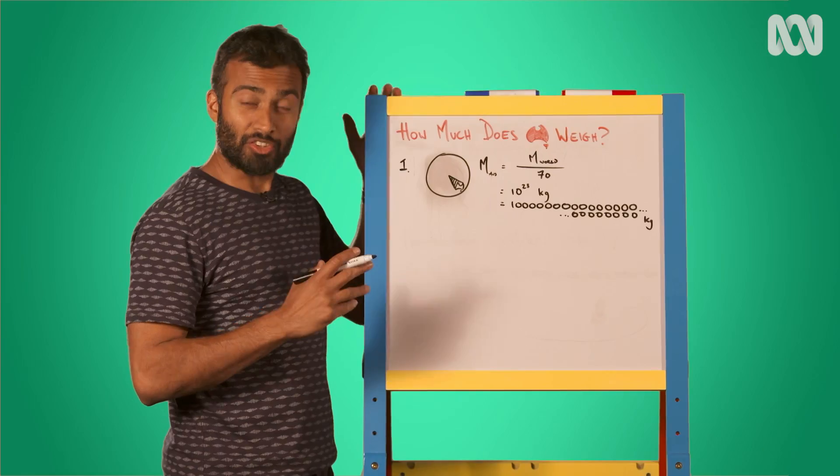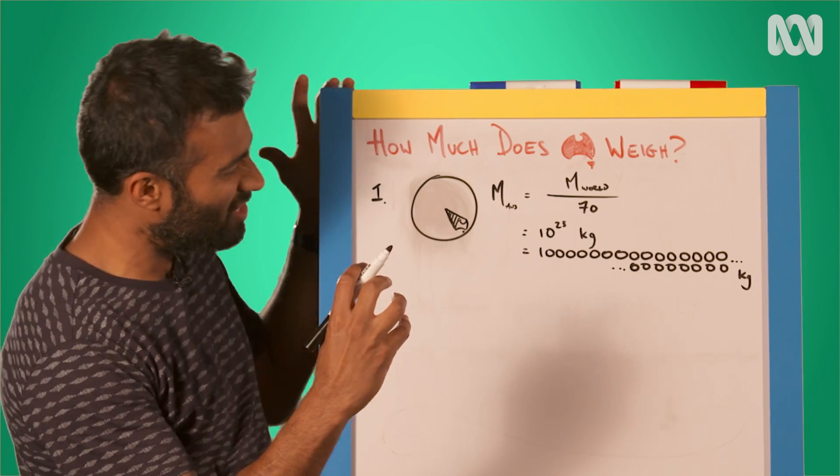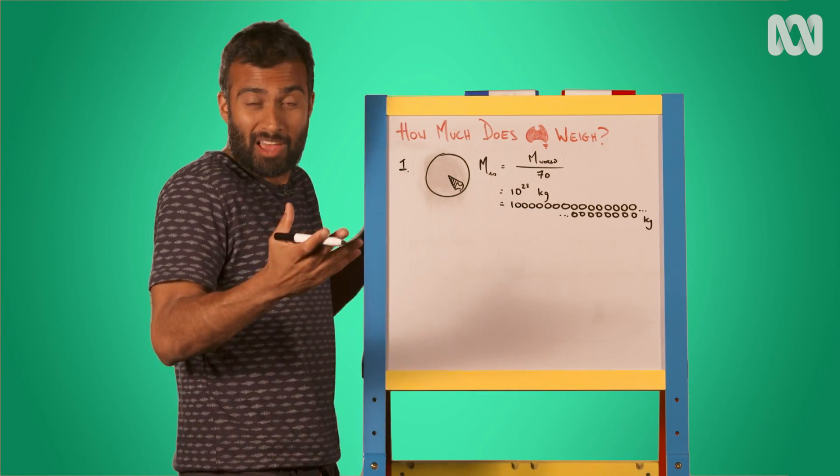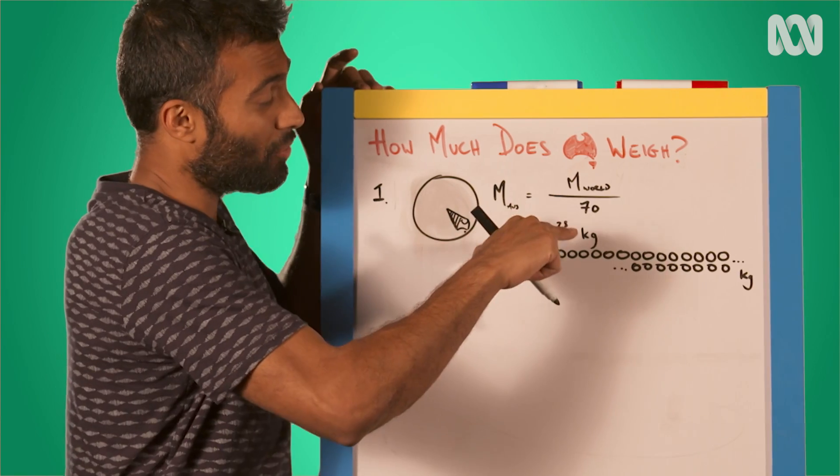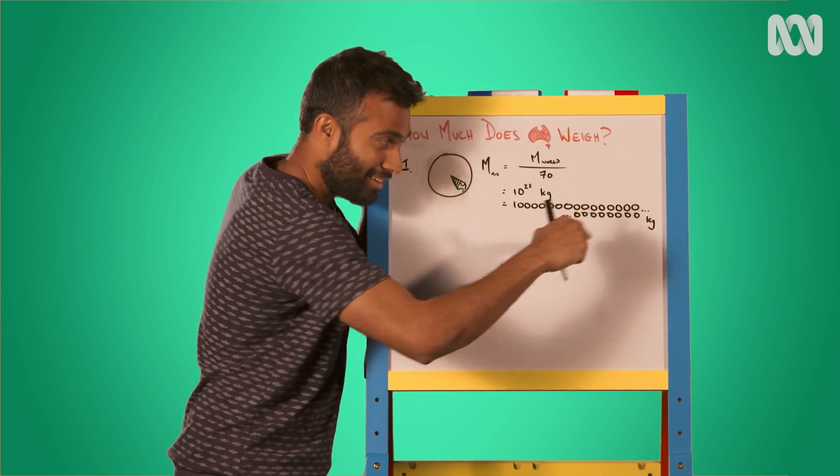So we plug all the numbers in and what we get is an answer of about 10 to the 23 kilograms. So if you missed any of that, if we found the weight of the Australian portion of the world as if we were an ice cream cone segment to the middle of the planet, Australia weighs about 1/70th the mass of the world, or 10 to the 23 kilograms, which is one with 23 zeros after it, kilograms.